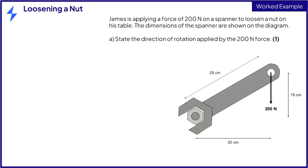This worked example is about James using a spanner to loosen a nut. James is applying a force of 200 newtons on a spanner to loosen a nut from his table. The dimensions of the spanner are shown in the diagram.